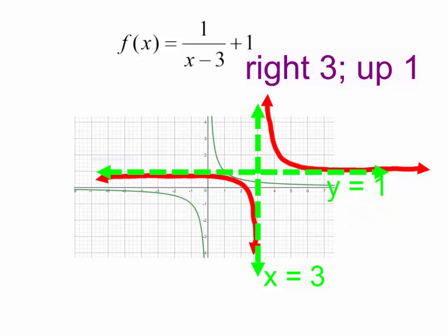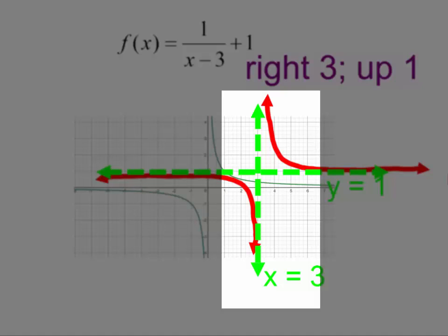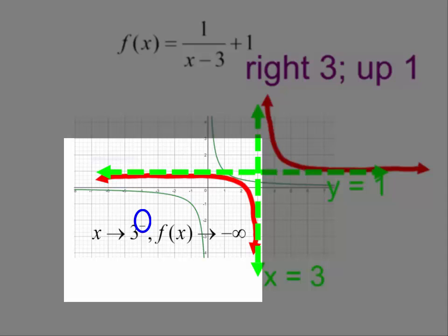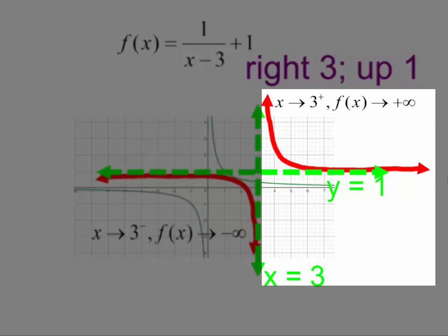We know what the function is doing on the far right and far left. What's it doing in the middle? Our vertical asymptote is now x equals 3. As my x's approach 3 from the left side, my red function is going down — the y's are getting smaller and smaller, going to negative infinity. And as my x's are approaching 3 from the right side, my f of x is going up to positive infinity.